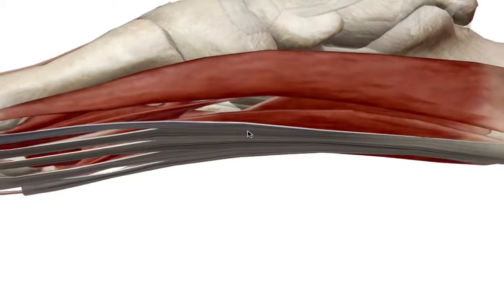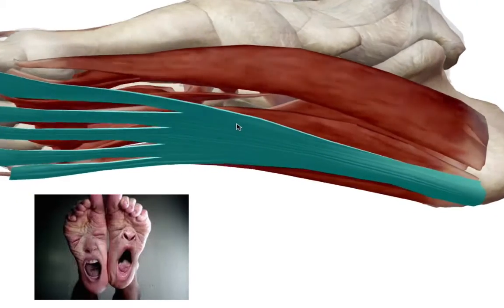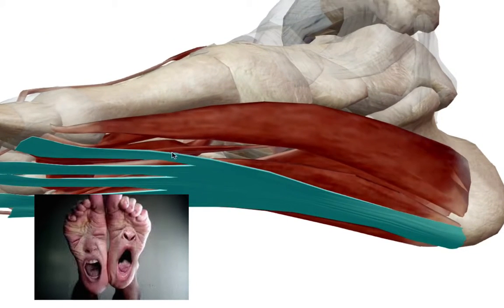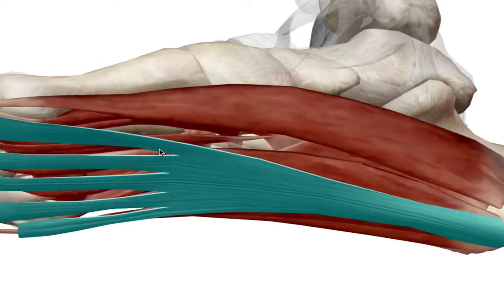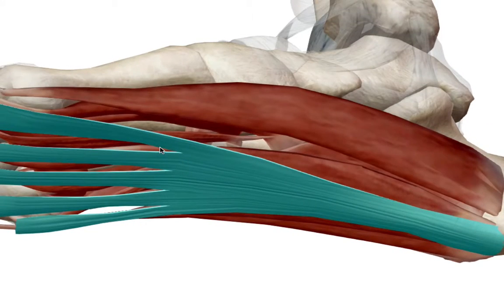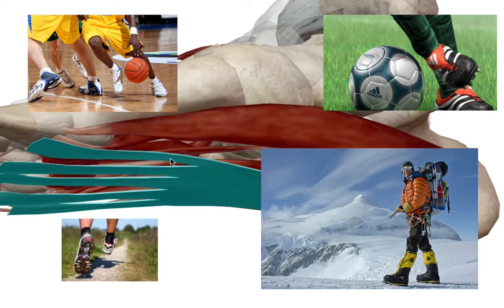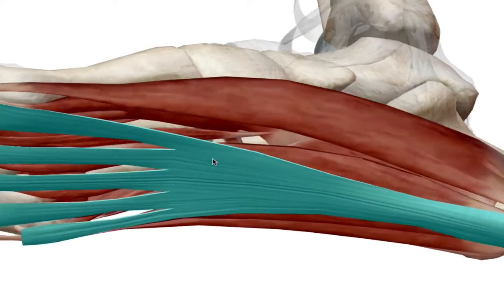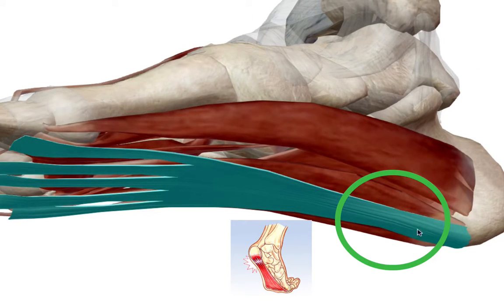Biomechanical studies have shown that 14 percent of the overall load your body takes — your body weight or whatever you're carrying — is taken up by the plantar fascia. This connective tissue and its collagen takes on quite a bit of load and punishment throughout the day. In cadaver stress tests, when this tissue has ruptured, it typically ruptures at the proximal end of the calcaneus.